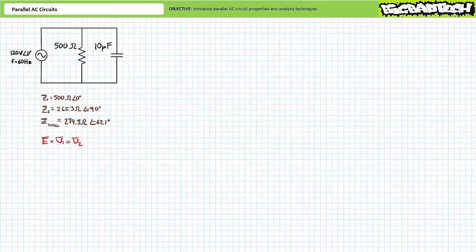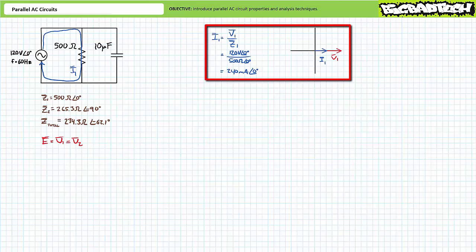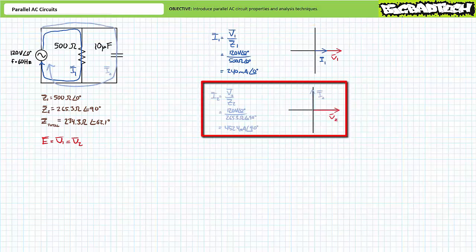Let's now examine current distribution through individual elements within this parallel AC circuit and source current. Given known impedance and voltage values, it's possible to directly solve for current through each individual element using Ohm's law: current equals voltage divided by impedance. An application of Ohm's law for resistive impedance Z1 demonstrates I1 to be 240 mA at an angle of zero degrees. Current through purely resistive impedance Z1 will be in phase with the voltage across it. For capacitive impedance Z2, I2 is approximately 452.4 mA at an angle of 90 degrees.